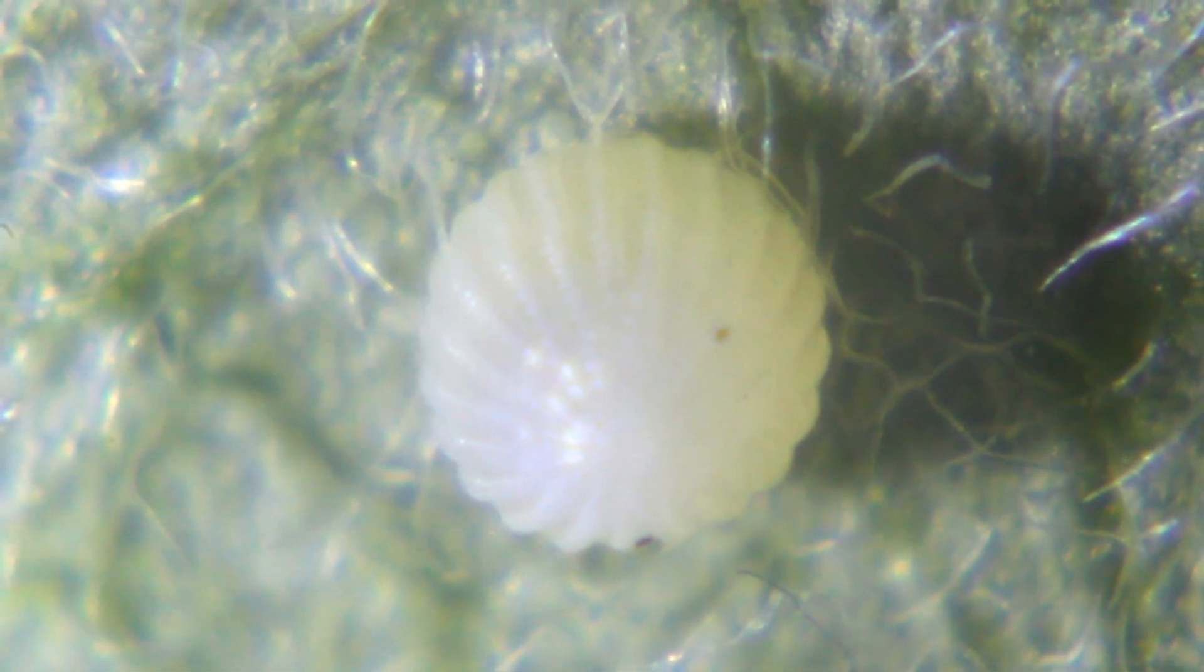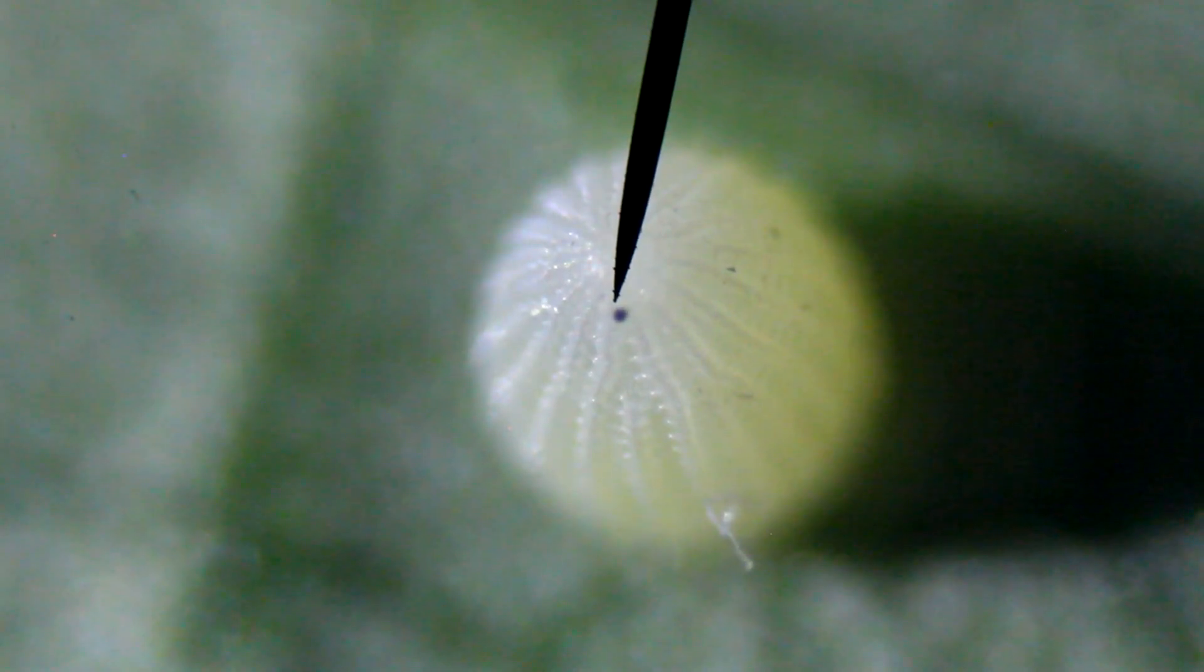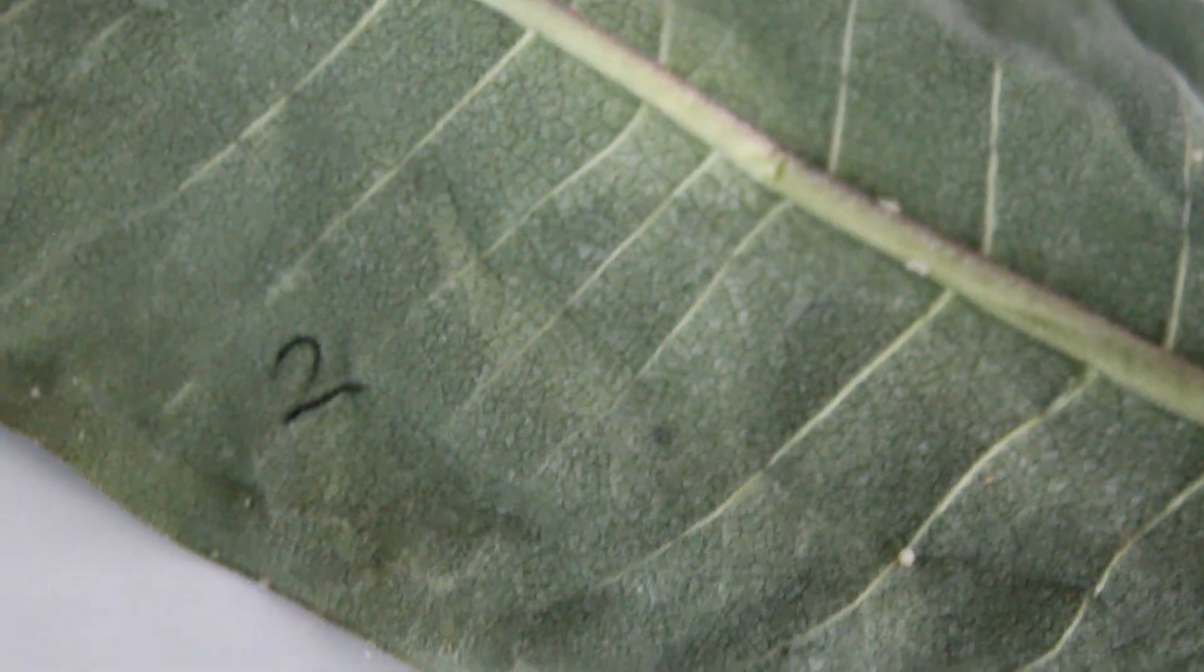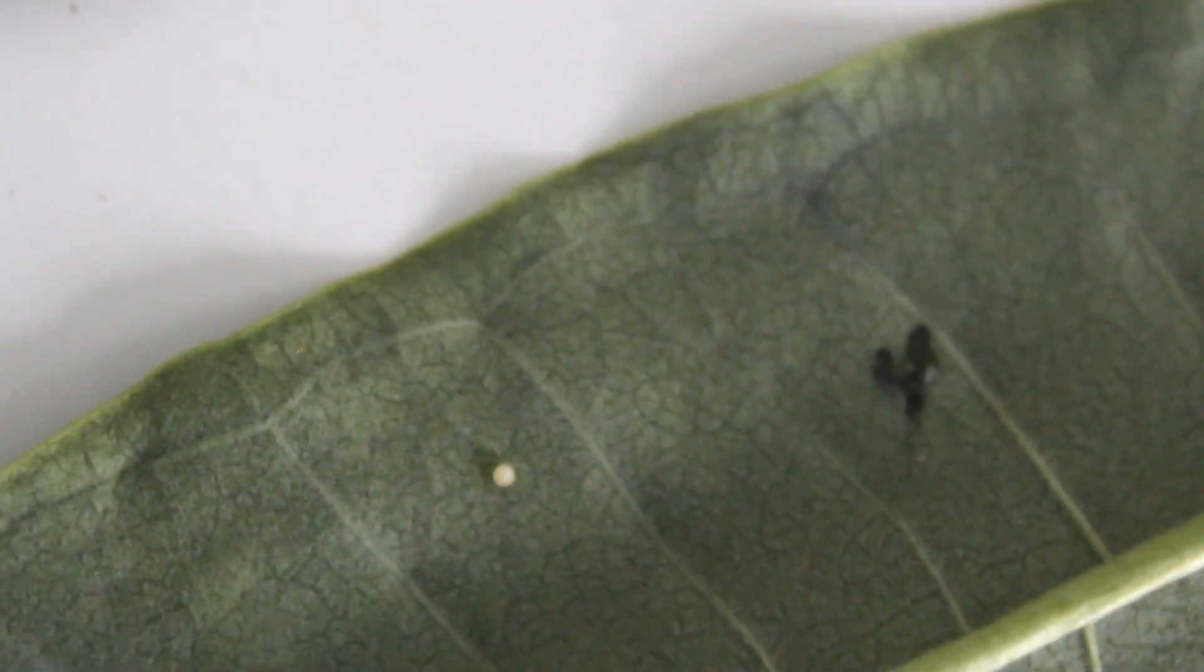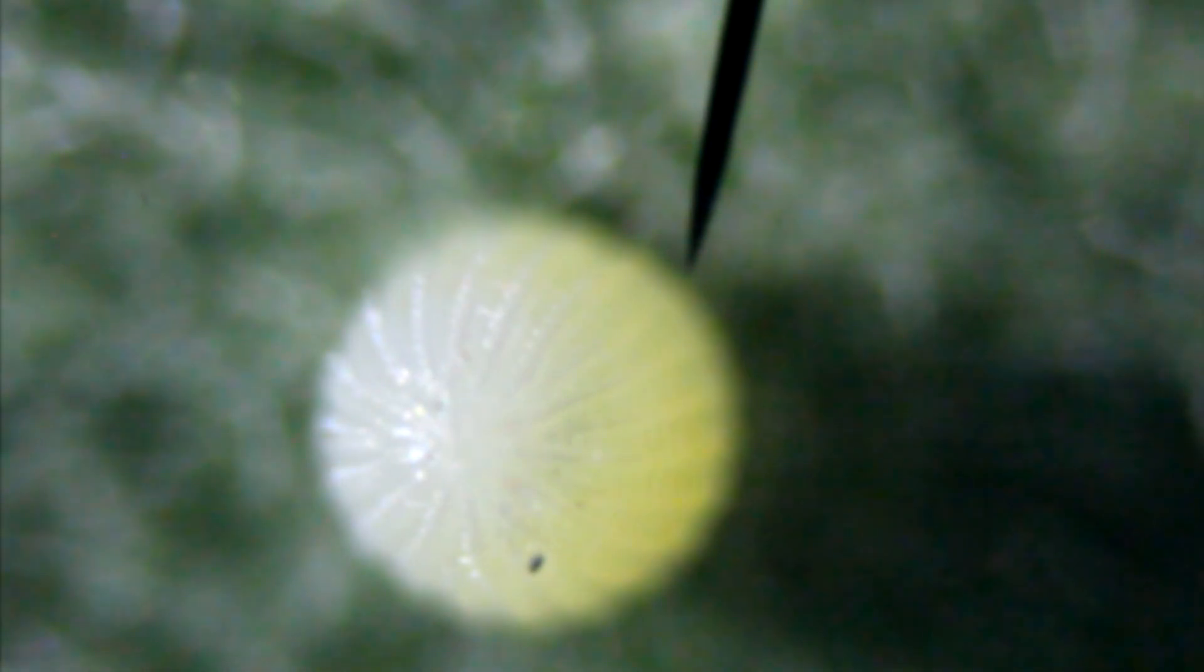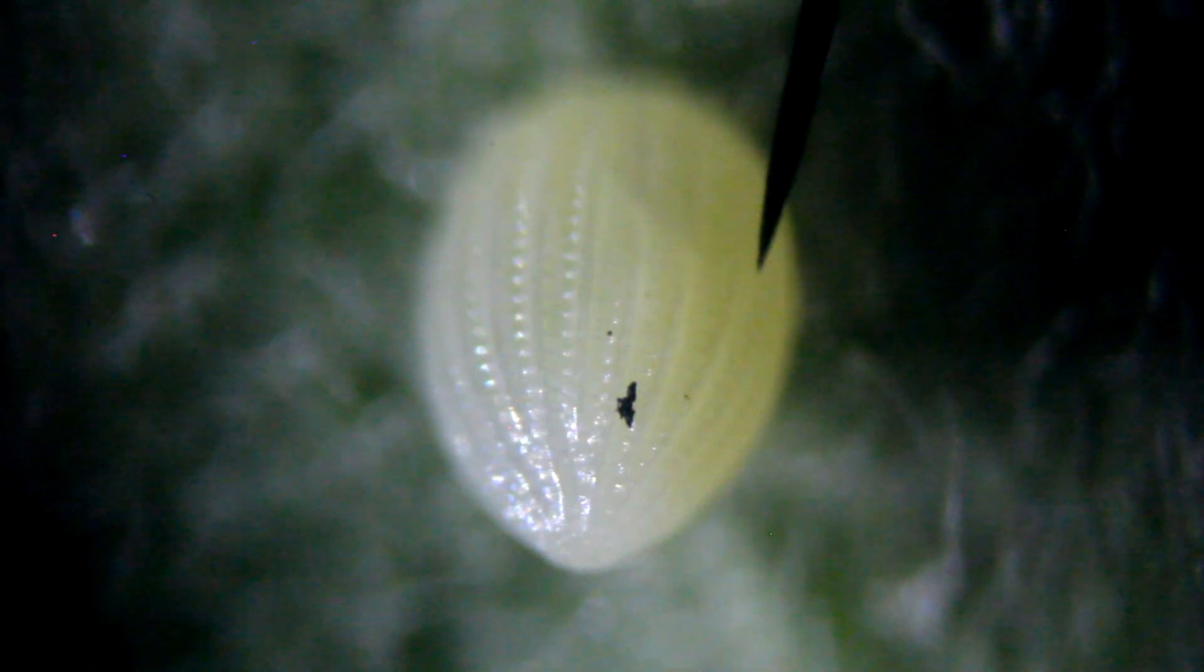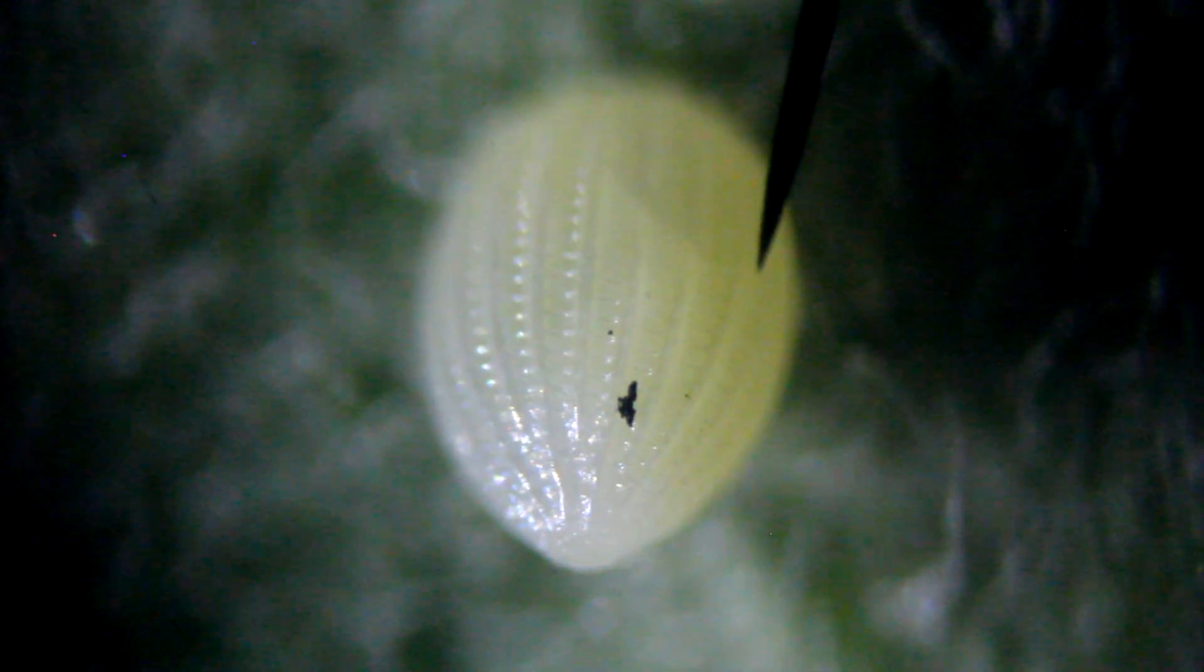Here is egg number one. Here is egg number two. We do actually not only see the spores here, we also see some movement. This is egg number two. Egg number three. Milkweed made the handwriting tough on that one, but here is egg number four. Egg number five.